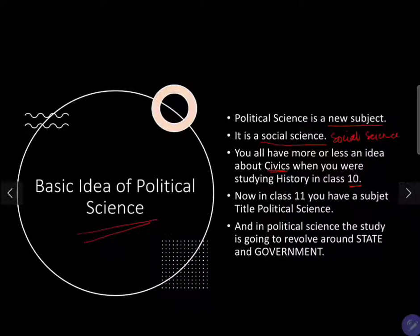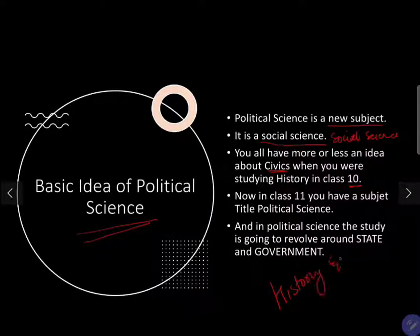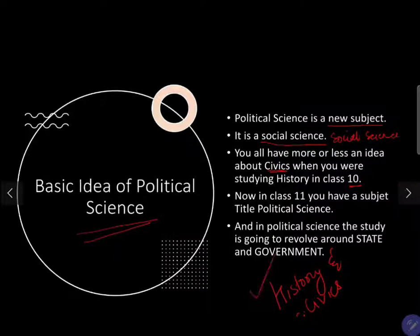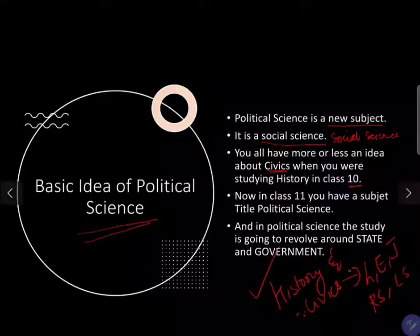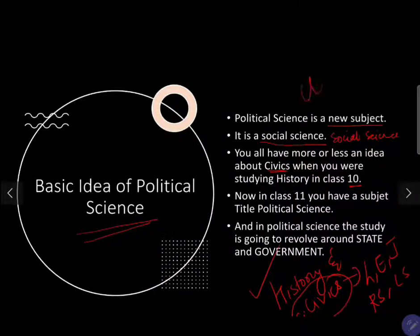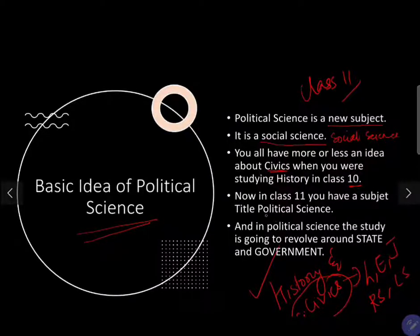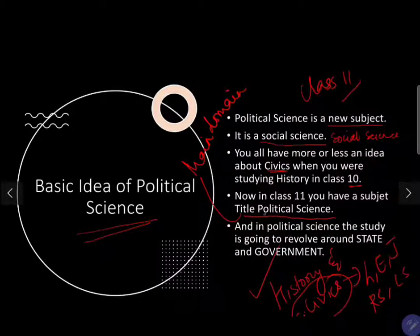You all have more or less an idea about civics from class 5 or class 6 onwards, where we had a subject called history and civics. In civics, we studied about the legislative, executive, and judiciary — the rajasabha, loksabha, and their functions. Now, when you have reached class 11, this civics subject has been changed to the title 'political science.'